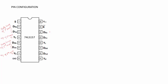Pin number 14 and 13 are the data lines of the third multiplexer. Pin number 12 is the output of the third multiplexer. Pin number 11 and 10 are the data lines of the fourth multiplexer. Pin number 9 is the output of the fourth multiplexer.